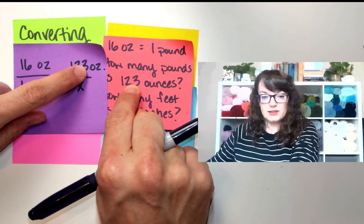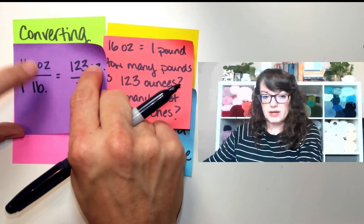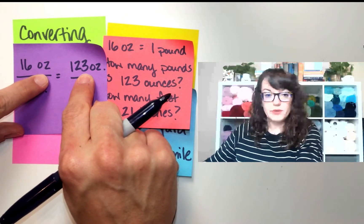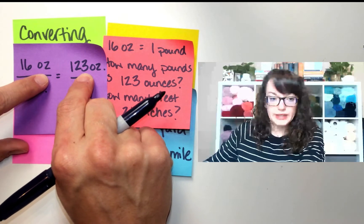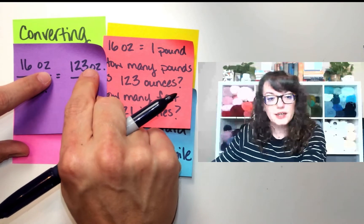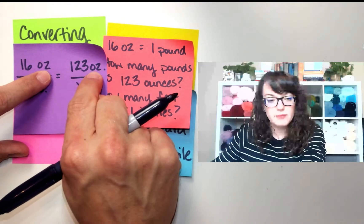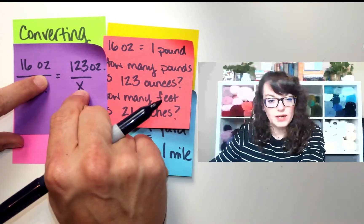So this is ounces. Ounces goes across from ounces. Match up your units. Label your units. You're less likely to make a mistake if you're labeling your units, because then you'll see if you get them flip-flopped.